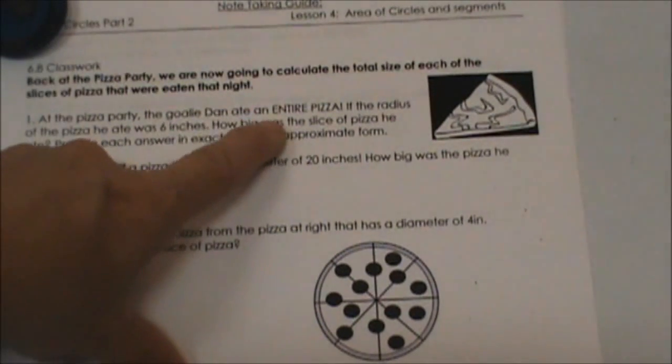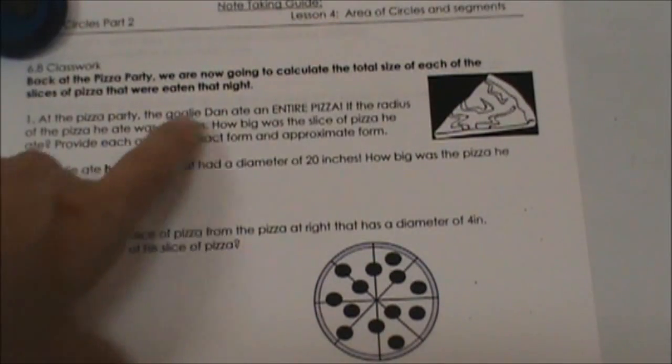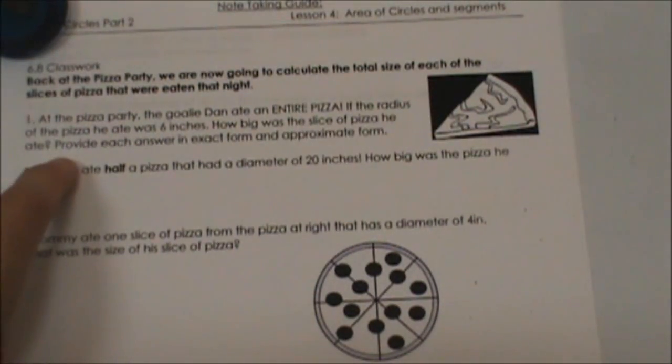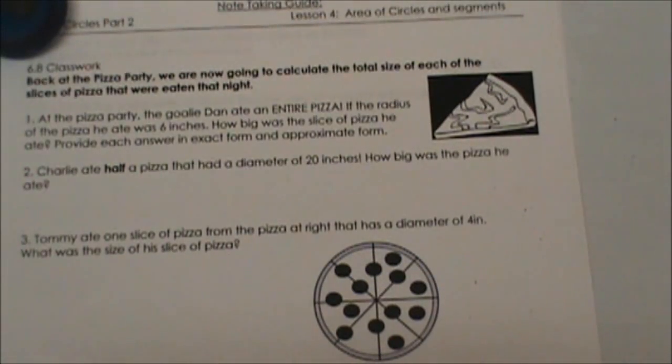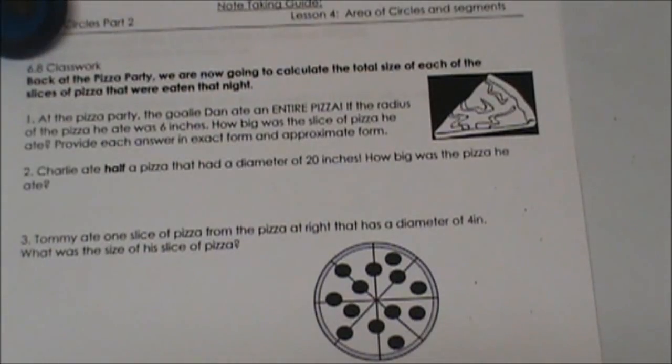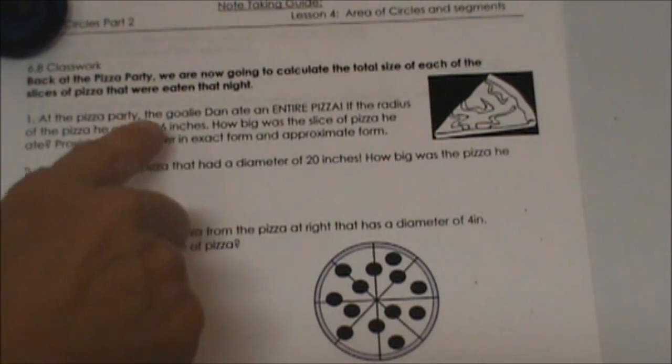At the pizza party, the goalie Dan ate an entire pizza. If the radius of the pizza he ate was six inches, how big was the slice of pizza he ate? Well, did he eat a slice of pizza or did he eat the whole pizza? Well, he ate the whole pizza, so all we need to do is find the area of the pizza that has a radius of six.